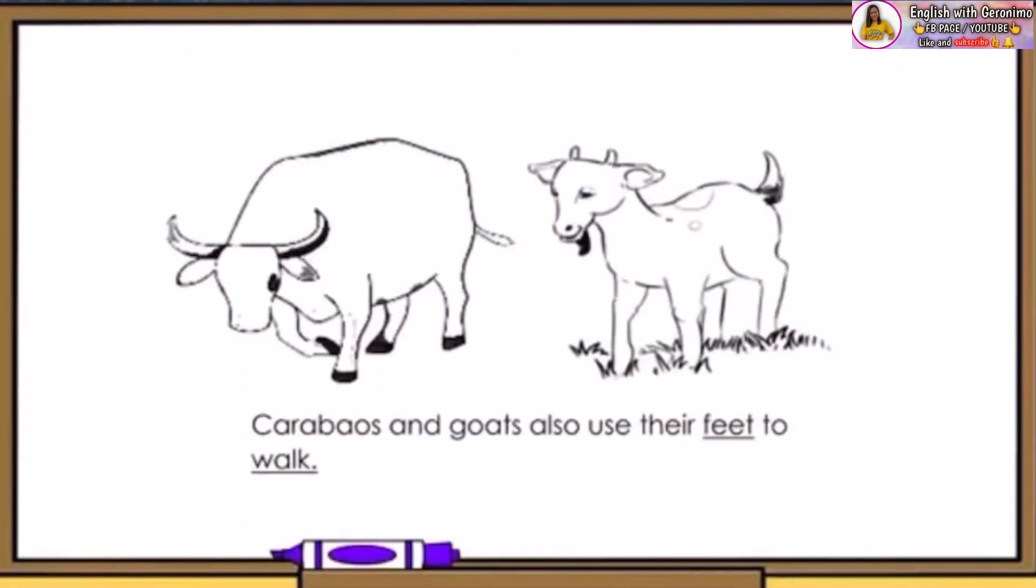How about these animals? How do they move? This is a carabao, and carabao can walk and run. This is a goat. The goat can walk and run too. They also use their feet to walk and run just like dogs and cats.